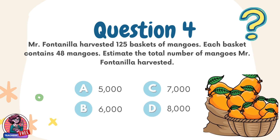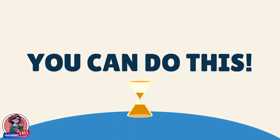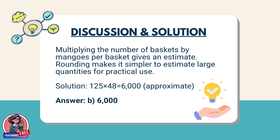Question 4. Mr. Fontanilla harvested 125 baskets of mangoes. Each basket contains 48 mangoes. Estimate the total number of mangoes Mr. Fontanilla harvested. Choices: A. 5,000, B. 6,000, C. 7,000, D. 8,000. Discussion: Multiplying the number of baskets by mangoes per basket gives an estimate. Rounding makes it simpler to estimate large quantities for practical use. Solution: 125 × 48 ≈ 6,000. Answer: B. 6,000.